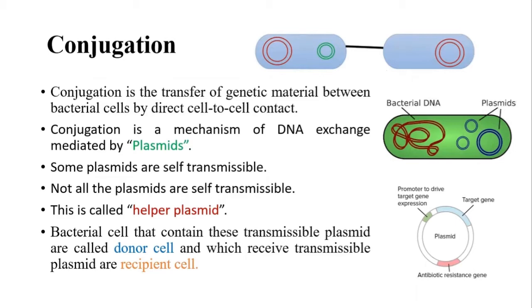The genetic material which is exchanged between the bacterial cells is from plasmid DNA. Conjugation is possible only with the help of plasmids.